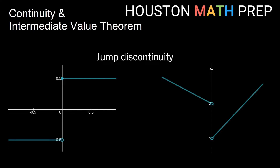Other types that are non-removable: we have a jump discontinuity. Maybe you're on one piece of graph and then you jump up to another piece of graph and continue. Whether you're going from an open hole to a closed hole, or from an open hole to another open hole, the idea is we're on one piece and must jump to another y value to continue. These are non-removable — we can't just fill in one point and say these are connected graphs.